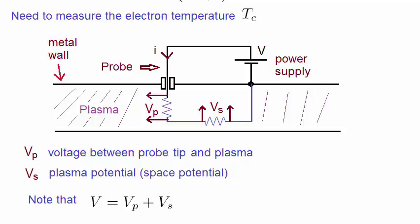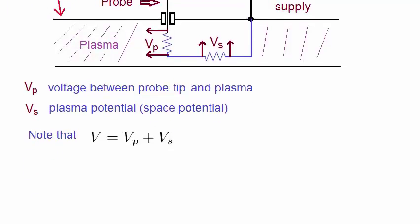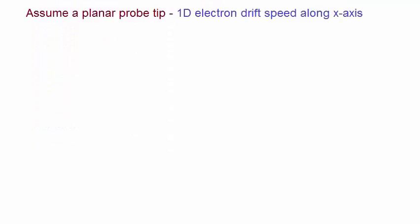First, let's obtain the electron temperature. For simplicity, we assume that the probe tip is planar. That is, the electron drift speed travels along one dimension that we've taken here to be the x-axis.